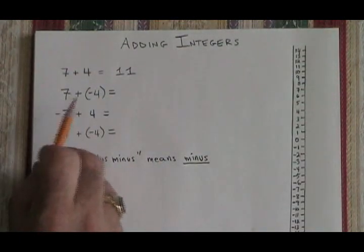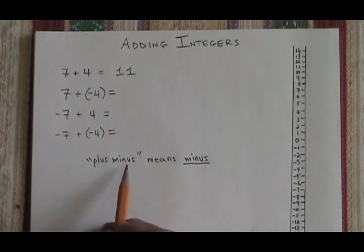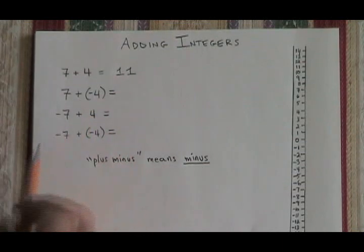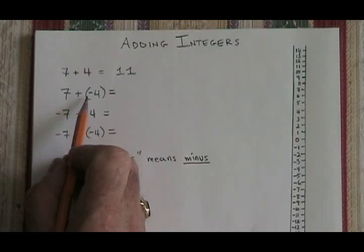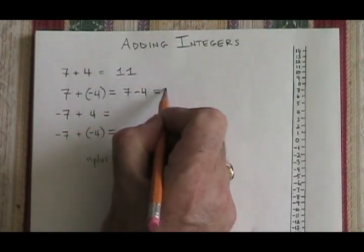But if we have 7 plus negative 4, we have to know this little rule. Plus minus means minus. Adding a negative is the same as subtracting. So 7 plus negative 4 is the same as 7 minus 4, which is 3.